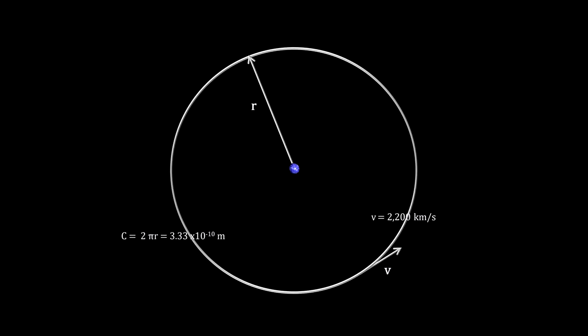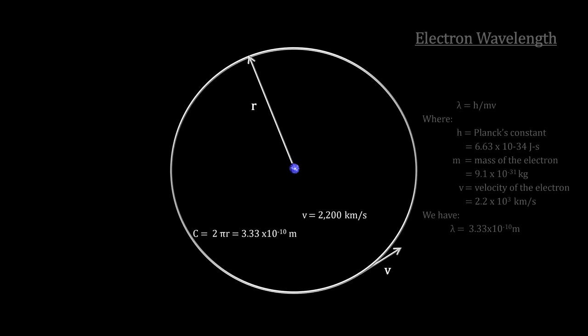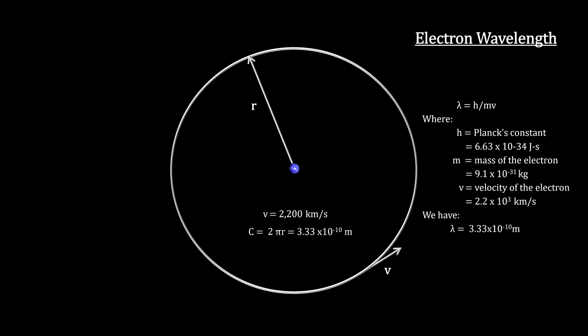So, like we did for electron microscopes in the previous segment, he calculated its wavelength. He found that it was exactly the length of the electron orbit's circumference, as enumerated by Bohr.